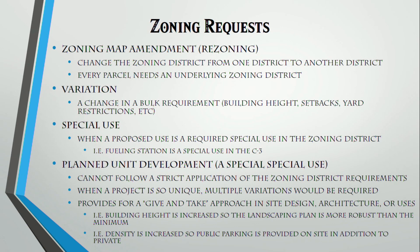A special use is when a proposed use is required by the use chart to go through that process. For example, a fueling station — a gas station — is a special use in the C3 commercial district. It's not allowed by right. You have to go through the special use process because we need to look at that site specifically to make sure the site plan makes sense, traffic patterns make sense, and that the use will work appropriately.